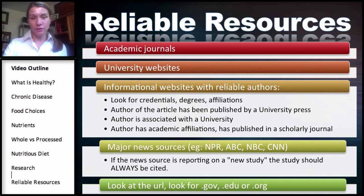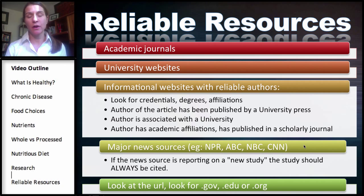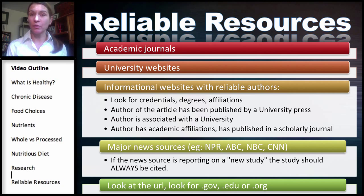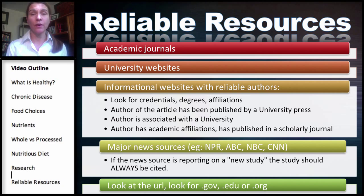Major news sources — if you look at NPR, ABC, NBC, CNN — some of these major news networks sometimes give good information. What you really need to do when you go to a news network is you want to see the study that they are talking about. And generally when they have a news report, they are talking about a study. That study should be cited. We talked about citations, and I'll go over that in a minute.